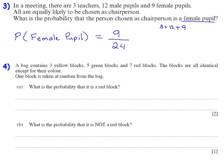And the next question, it says in a bag there's 3 yellow blocks, 5 green blocks and 7 red blocks. The blocks are all identical except for their colour. One block is taken at random from the bag. Okay, so part A. What is the probability that it is a red block? So P bracket red. So how many red blocks are there? Well, it's 7. So it's 7 out of. So we have 3 yellows, 5 greens and 7 red. You can add those up together. 3 add 5 is 8 and 7 is 15. So it's 7 out of 15.